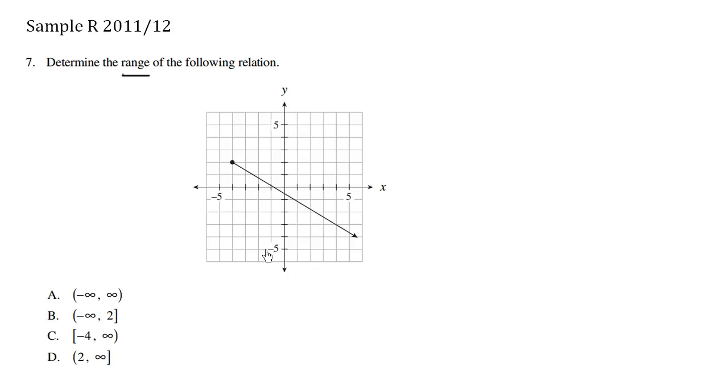So we start off at the lowest value which is a negative number all the way going up and the limit here is positive 2 including the endpoint. So we're looking for the number 2 as a second parameter here with a square bracket and the only choice I see here is B.